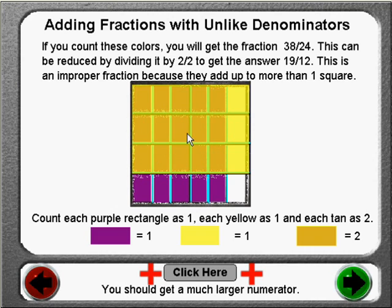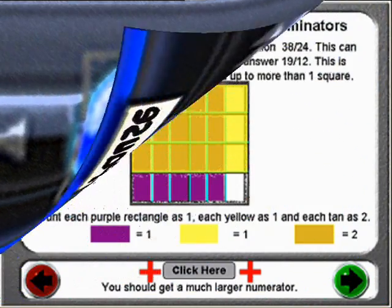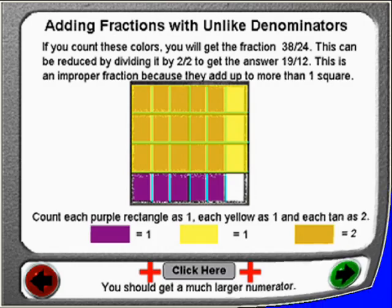Those thirty tans are then added to three yellows, which make a total of thirty-three tans and yellows. These in turn are then added to five purples to equal thirty-eight tans, yellows and purples out of a total of twenty-four squares. Pause this video to add the fractions five-sixths and three-fourths. Though the answer is thirty-eight twenty-fourths, what is important is that you show the steps of your work on how to convert five-sixths and three-fourths into each of their equivalent fractions so that their numerators can then be added.